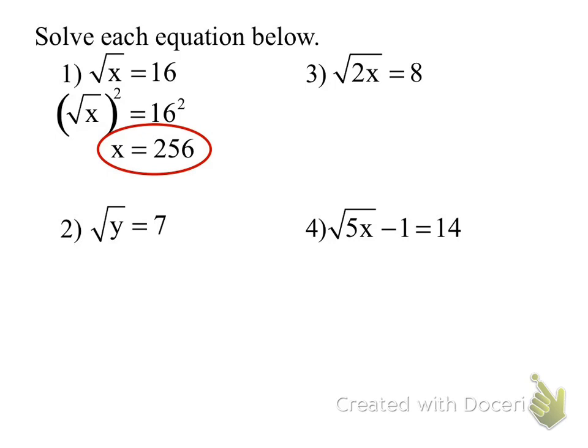Next one, number two. Tyler says you square both sides. What do I get? The square and root cancel — y equals... and 7 squared is 49. So y equals 49. When I square the root I end up with y, and 7 squared is 49.